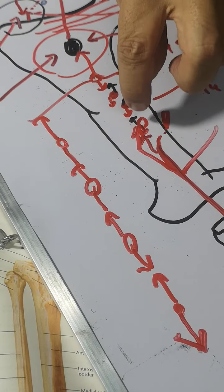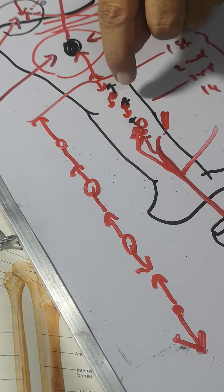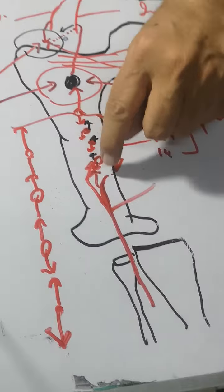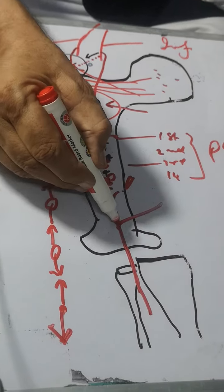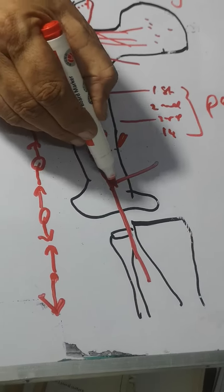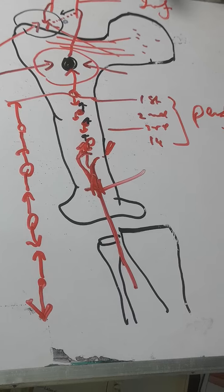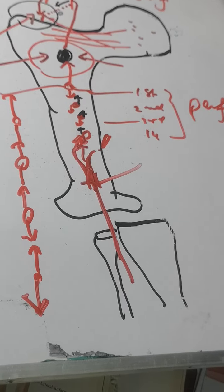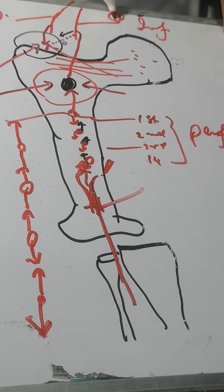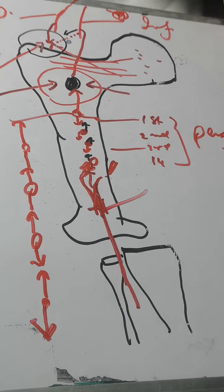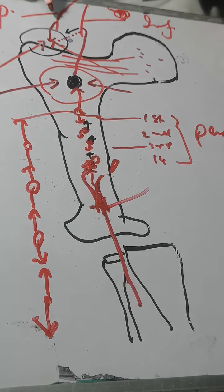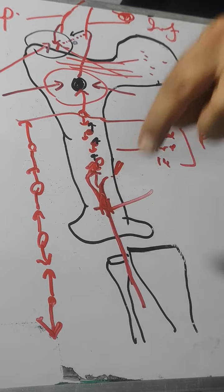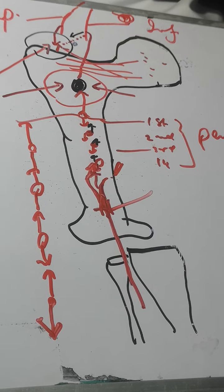This fourth perforating artery — its ascending branch anastomoses with the descending of the third, while the descending branch of the fourth anastomoses with the upper branch of the popliteal artery. In this way, the popliteal artery is ultimately connected to the internal iliac artery, which is present inside the pelvis through the superior and inferior gluteal arteries. A chain of anastomoses is present at the back of the thigh.